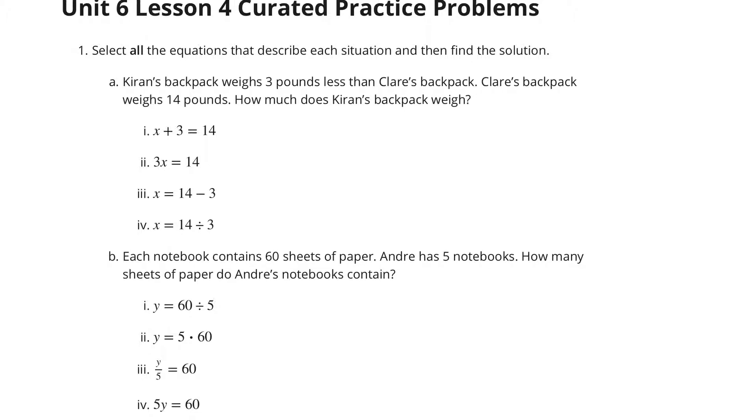One way of looking at this is saying if I have Kieran's backpack, KB, to make it equal to Claire's backpack, Claire's backpack is 3 pounds more. So if I take Kieran's backpack and add 3 to it, that'll get me to Claire's. In other words, Kieran's was 3 pounds less, so if I add 3, that's equal to Claire's. Kieran's backpack plus 3 is equal to Claire's, which is 14, so K plus 3 is equal to 14. I see an equation right here that matches that.